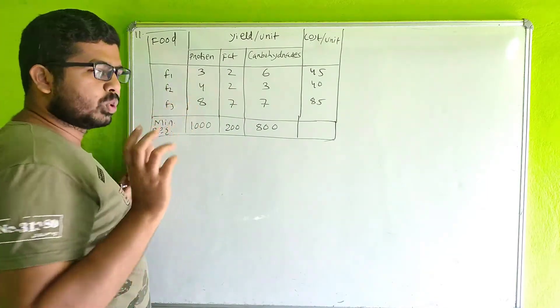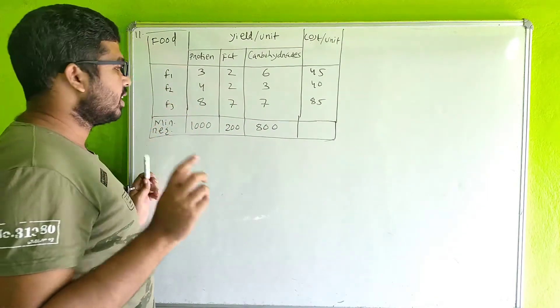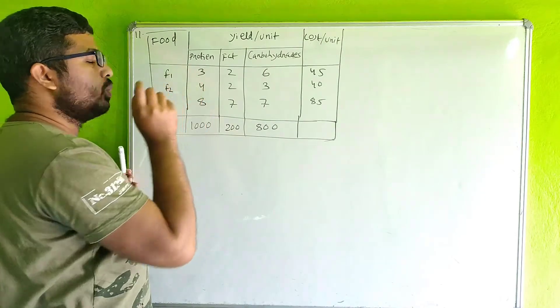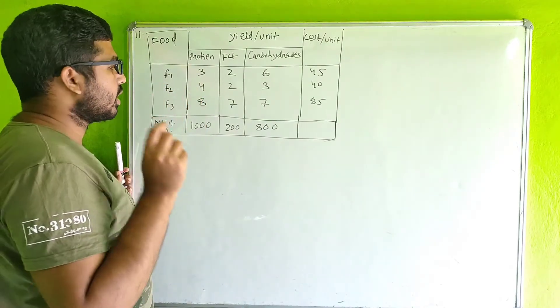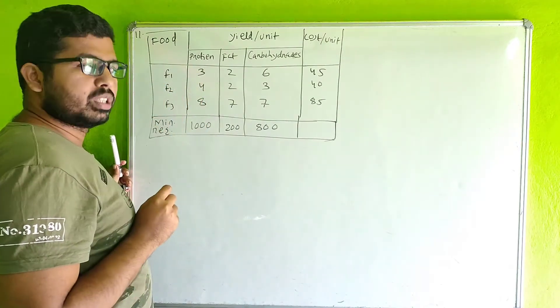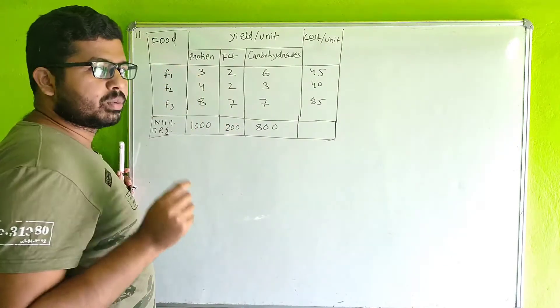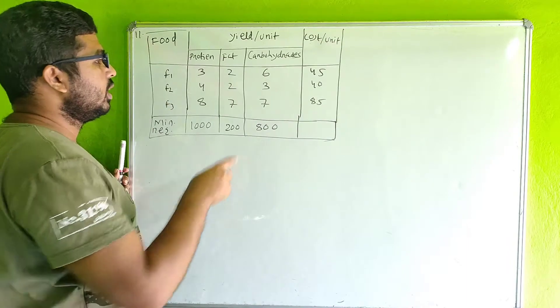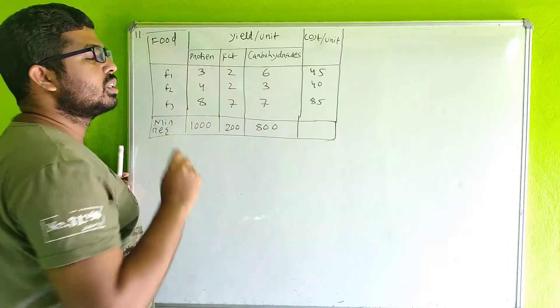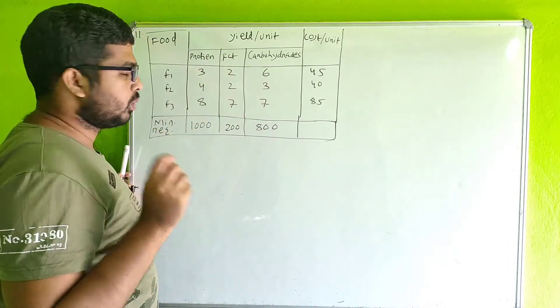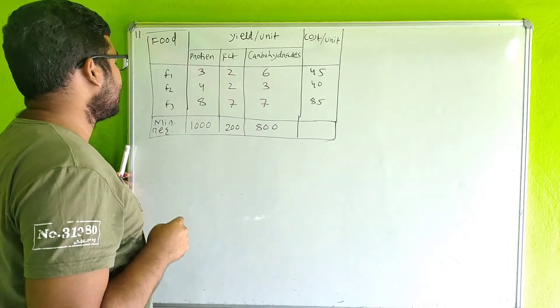F2 food is mixed with 4 units of protein, 2 units of fat, and 3 units of carbohydrates.